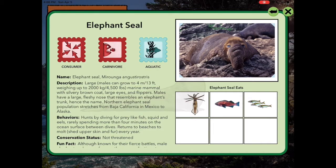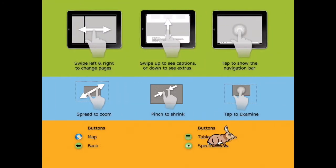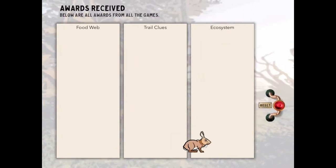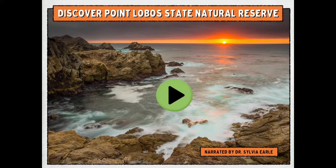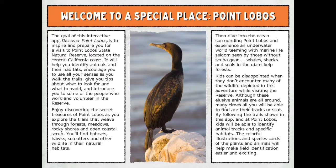To exit the species cards, click the X in the top right-hand corner. It'll take you back to the table of contents, where we can slide into the next page that explains how to use the app. There are awards you can receive from various games that will be displayed here. There's also a wonderful Discover Point Lobos welcoming video narrated by Dr. Sylvia Earle, which I encourage you to take a look at, followed by an explanation and a welcome to Point Lobos.